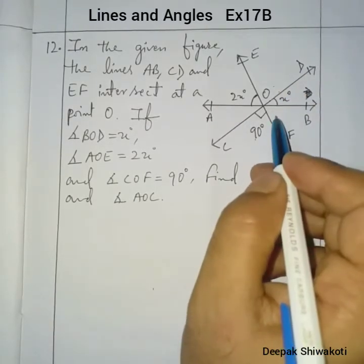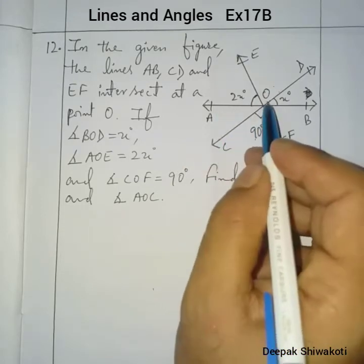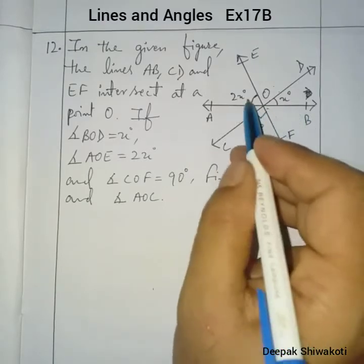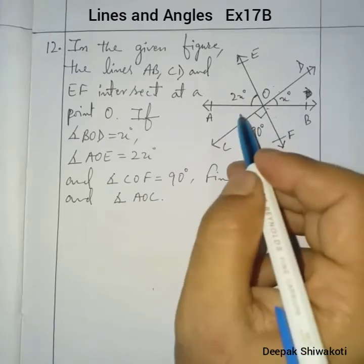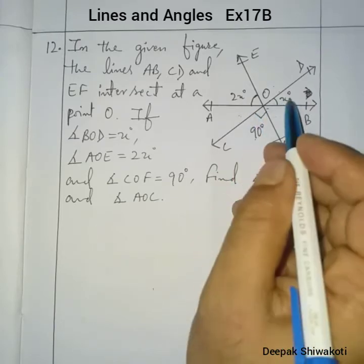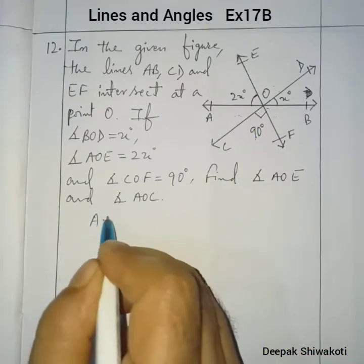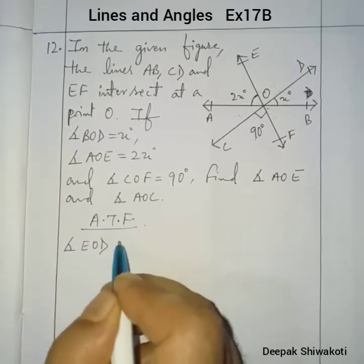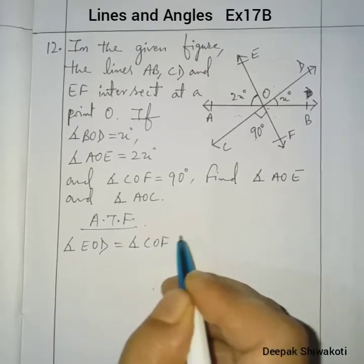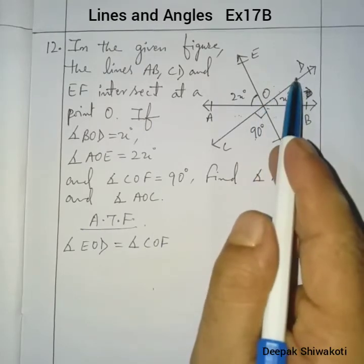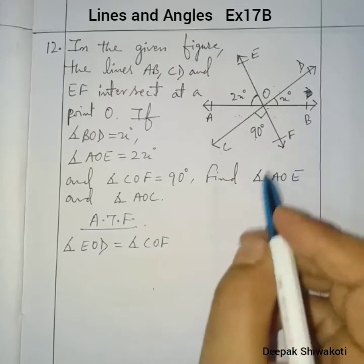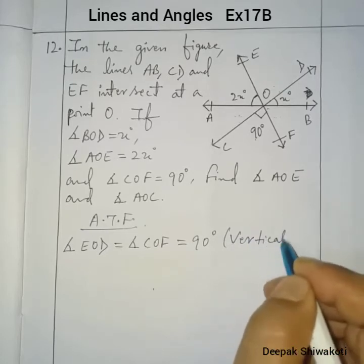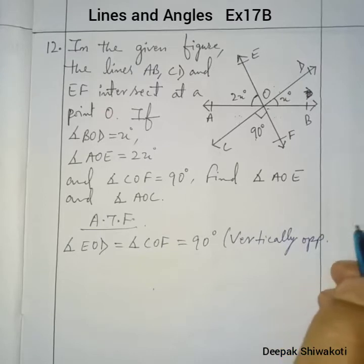And angle AOE is vertically opposite to angle FOB — or BOF. These two angles are also vertically opposite to each other and are equal. According to the figure, angle EOD is equal to angle COF, which equals 90 degrees, because these two angles are vertically opposite angles.